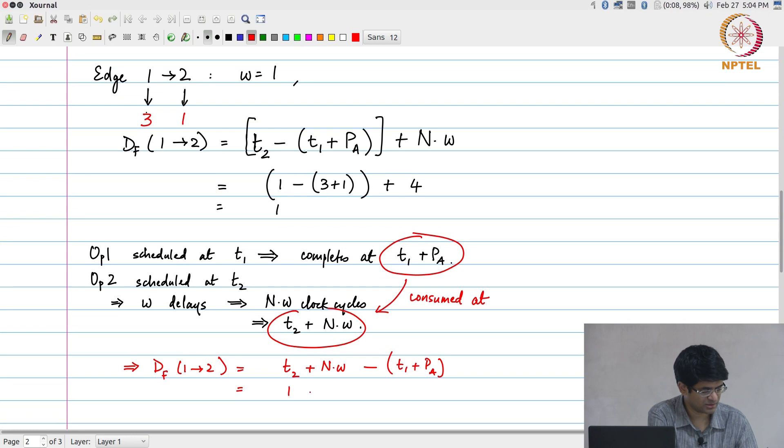The time of t2 was 1, this was 4 into 1 minus 3 plus 1, so it finally becomes equal to 1.